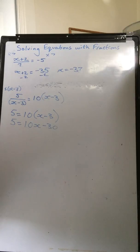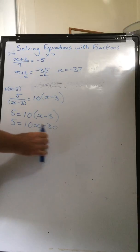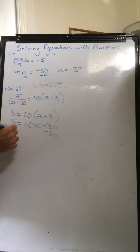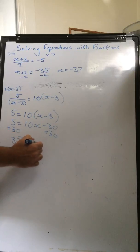We want to get x on its own at all times, so to do that, we're going to add 30 to both sides. We add 30 here, and we add 30 here. So we're left with 35 equals 10x.